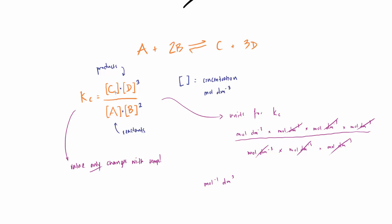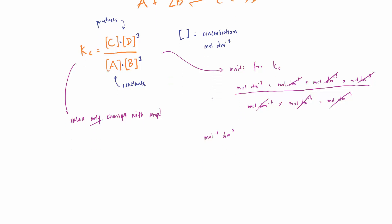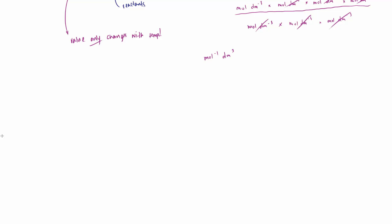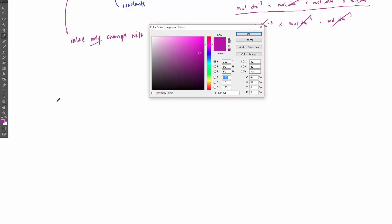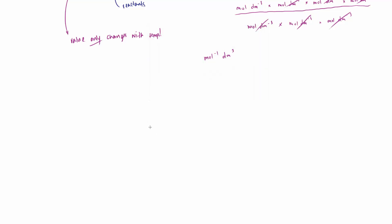Calculations can involve finding the bracketed reactant concentrations, or finding KC itself — it depends on the question. Let's look at a new equilibrium: A plus B in equilibrium with 3C, to illustrate finding moles at equilibrium.